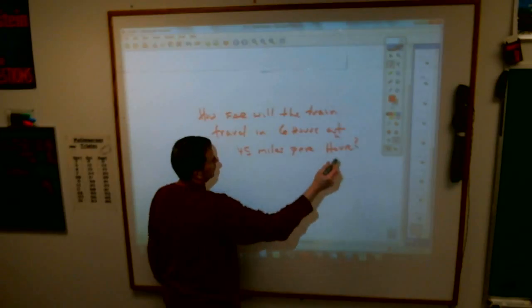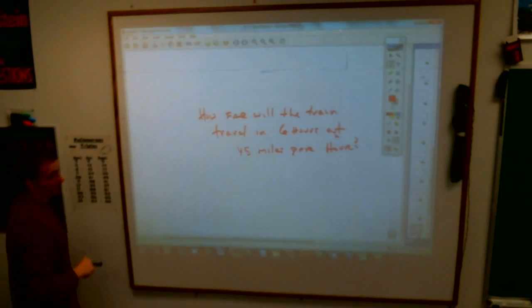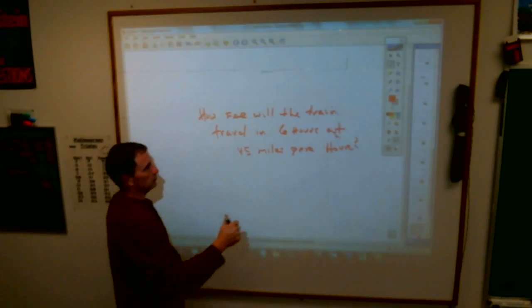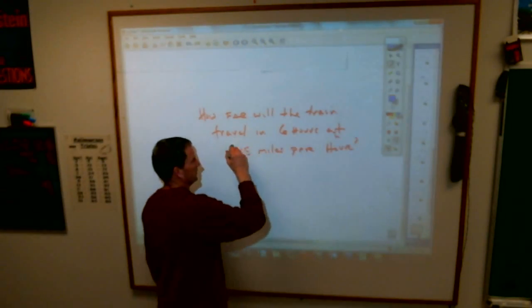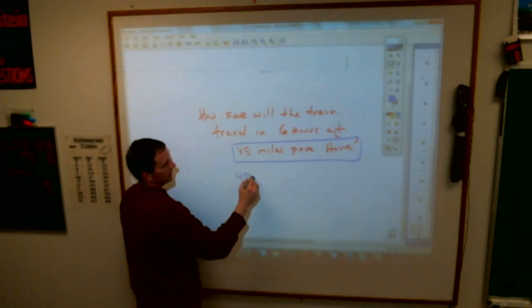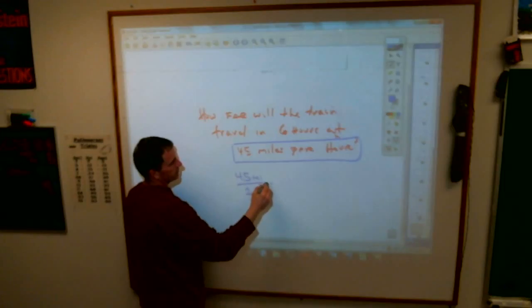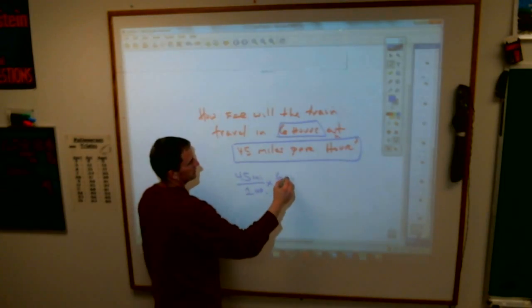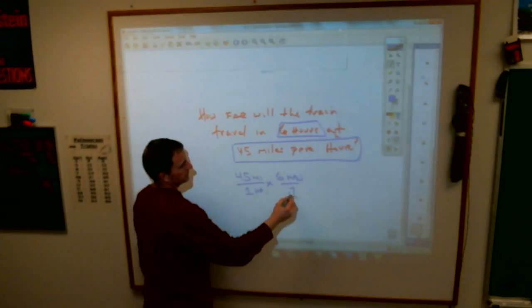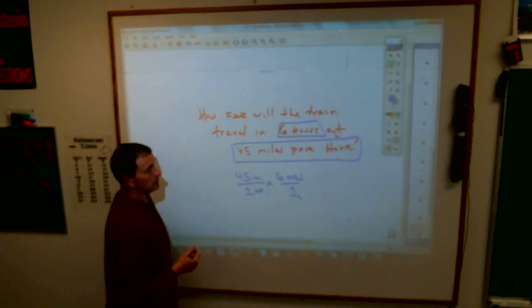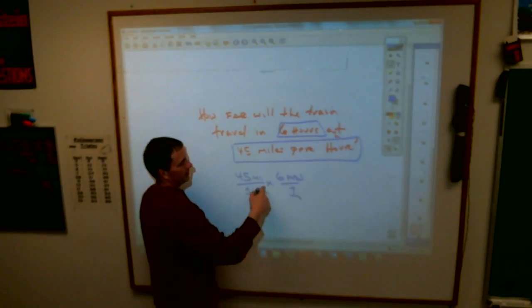Okay, now, most of you are saying, well, I just multiply 6 times 45. Yes, but I need to see this. You need to take this fraction, 45 miles per hour, and multiply it by 6 hours. And then what crosses off? Hours and hours.